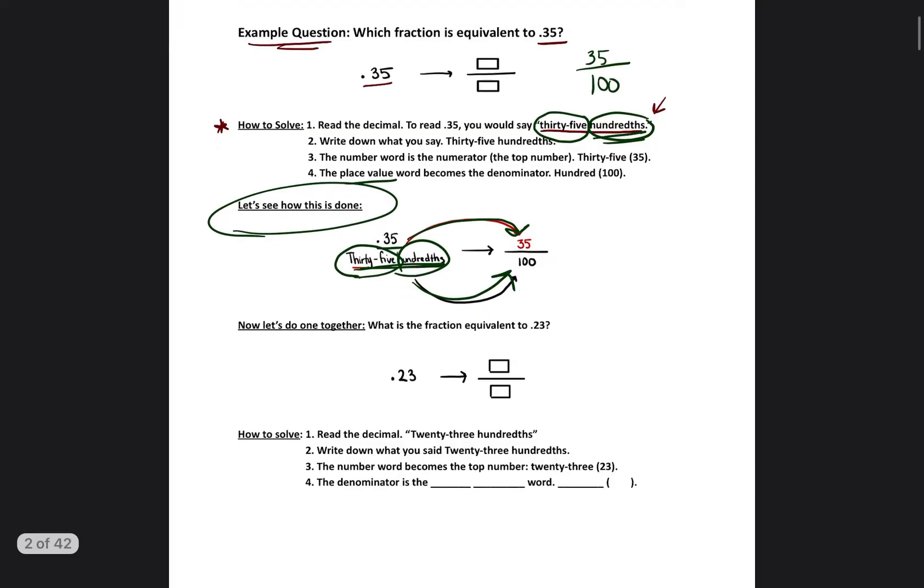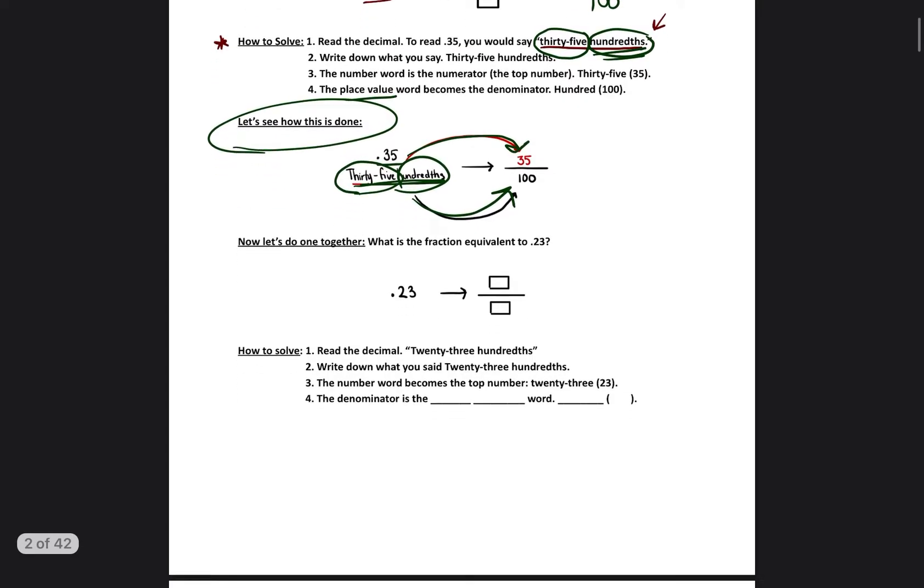So now we're going to continue and go on to our next one. So we're now going to try to write this decimal as a fraction. The very first step is to read the decimal. So we're going to read it as 23 hundredths. So after we read it, we write down 23 hundredths.